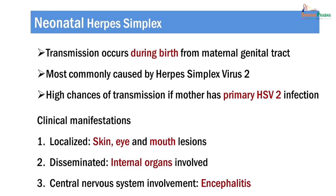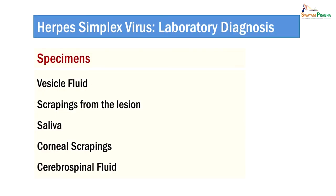The clinical manifestations of neonatal herpes can be in the form of localized infections, commonly known as SEM infection — that is skin, eye, and mouth lesions — where infections are confined to these areas and internal lesions are not seen. In the case of disseminated neonatal herpes simplex, there is involvement of organs, especially the liver. There can also be central nervous system involvement that can lead to encephalitis.